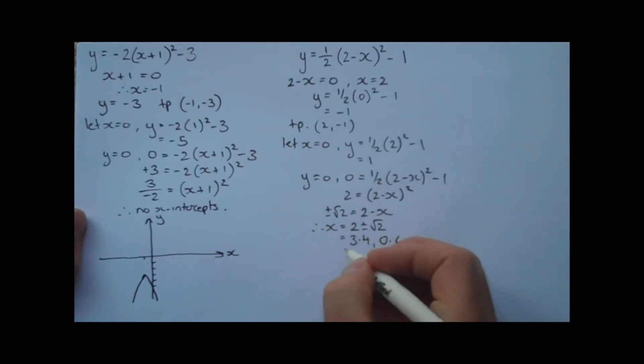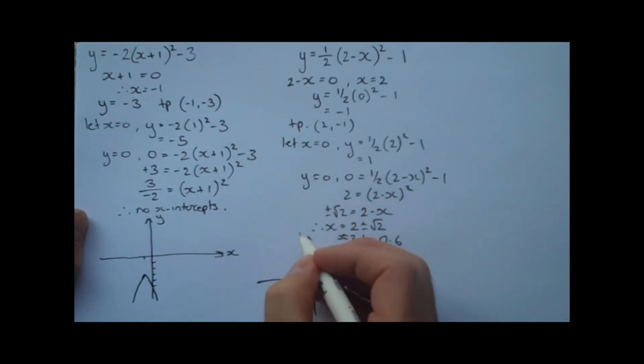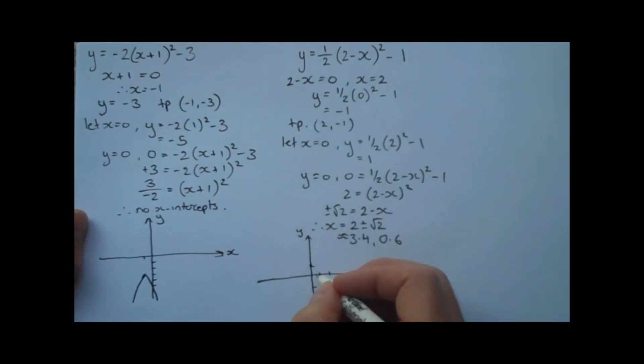And the approximate sign is actually a squiggly equals sign. So it looks something like that. Now we have enough information to graph this thing. So we'll set up some axes. Label our axes. It's always important to label our axes. First of all, put in the location of the turning point (2, -1). Now the y-intercept is at 1. So it's going to be there. And the x-intercepts are about 0.6 and about 3.4. So we're going to have a parabola that looks something like that. And that's a little better than my last one.